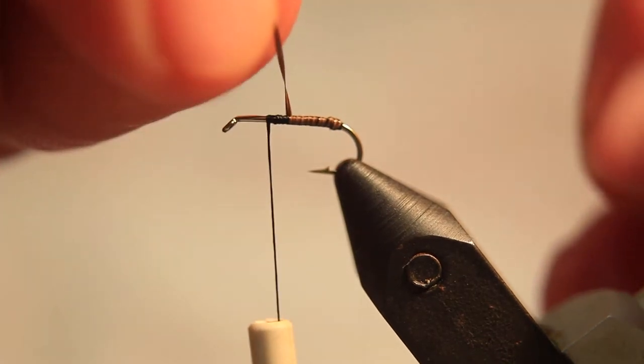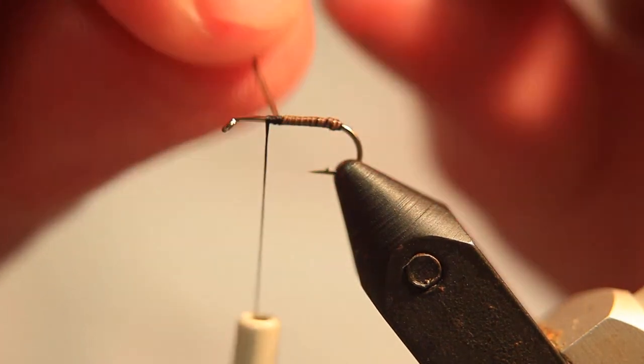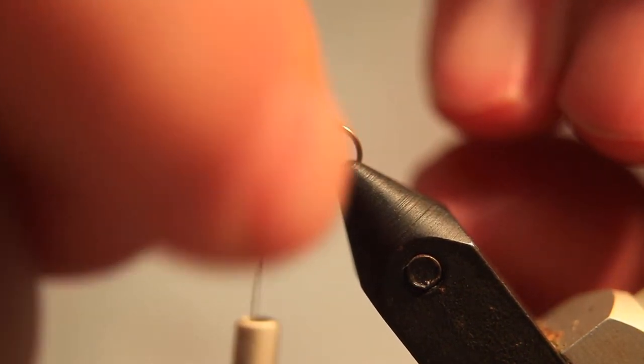And what I mean by that is, when a trout takes this fly, he'll cut this peacock herl stem quite easily. So it's just a matter of tying up a good number of them, and then retying them when you get back home.